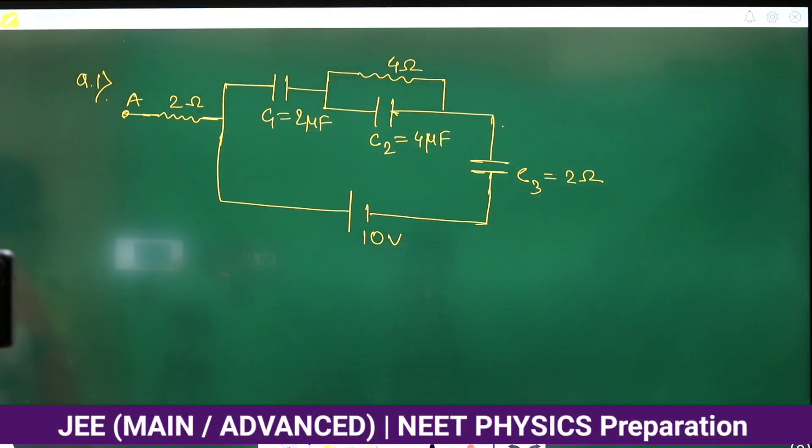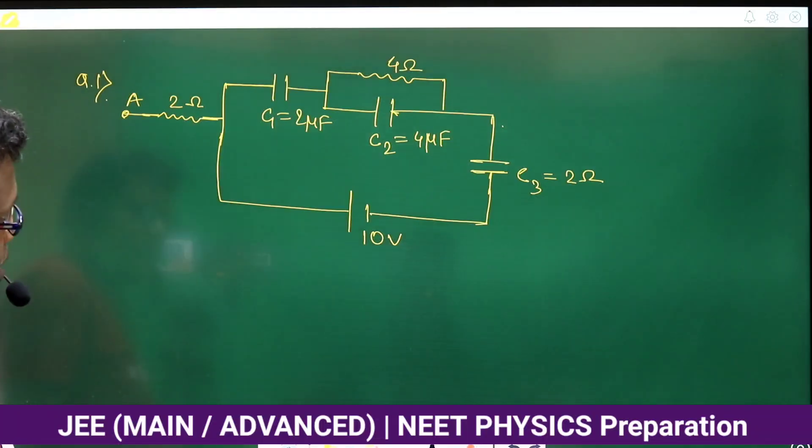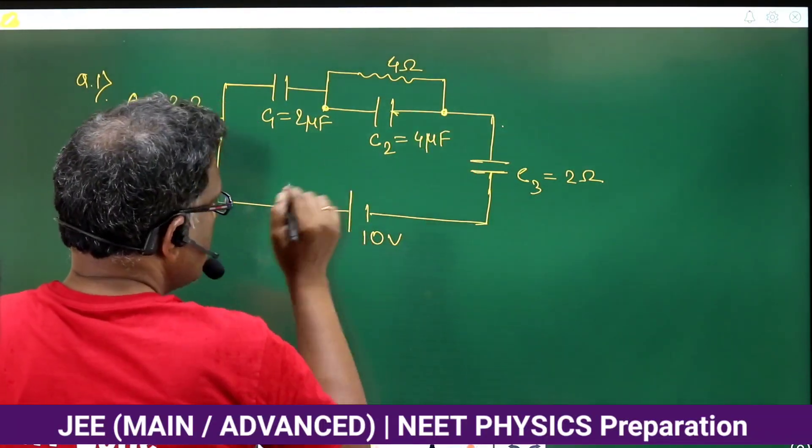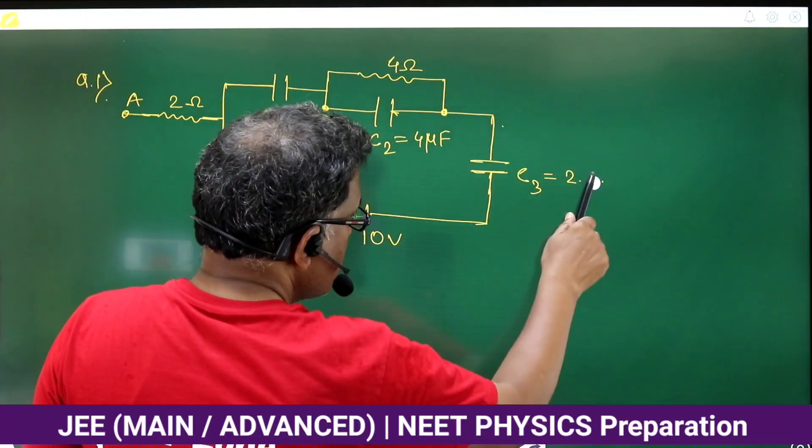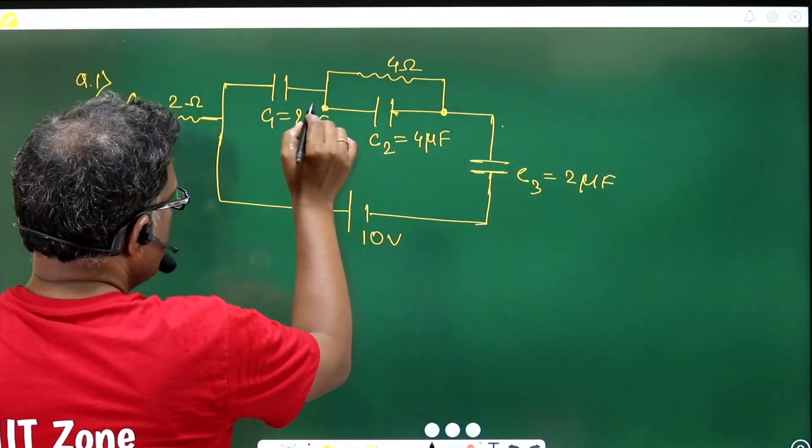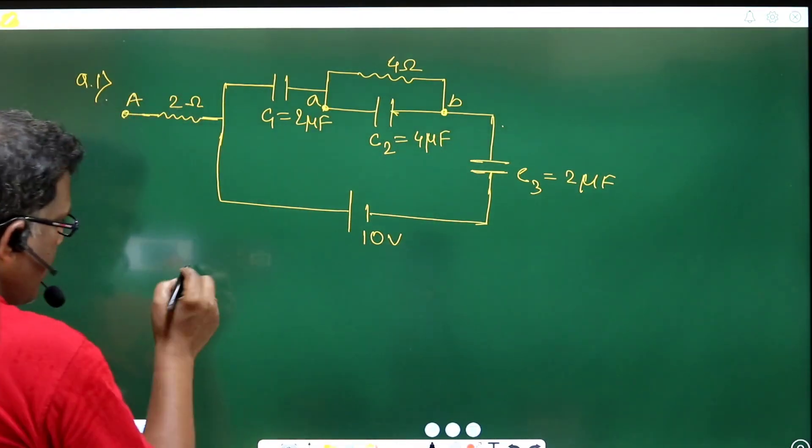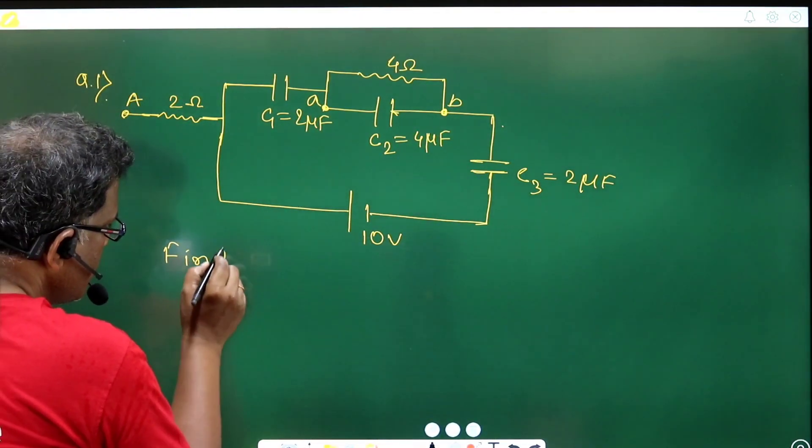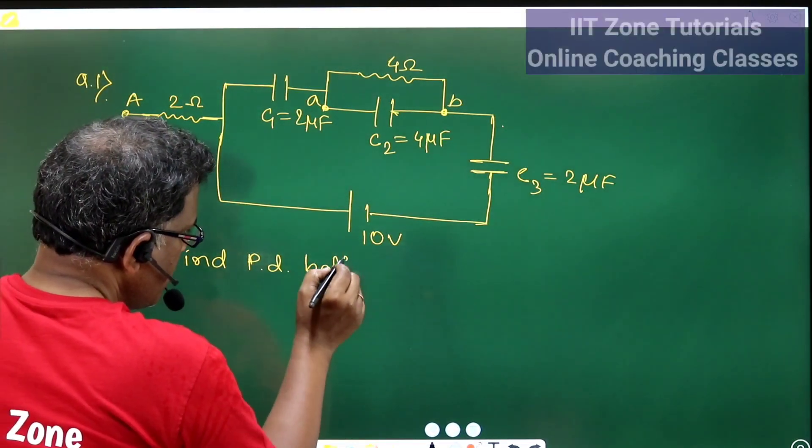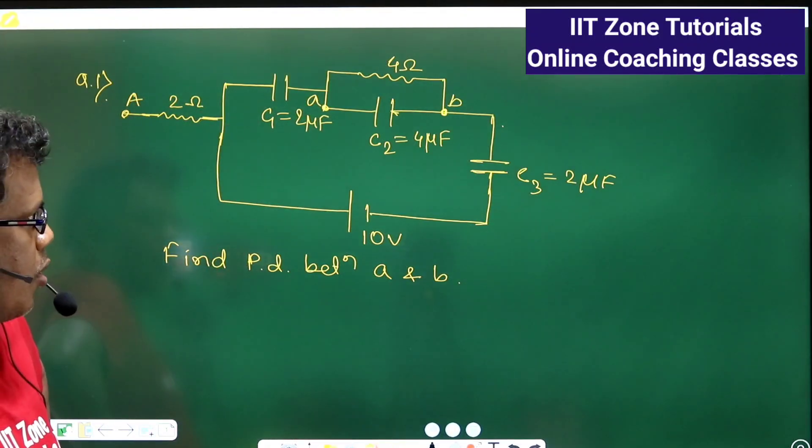This is a diagram given. They apply 10 volts, so what we want to know is: in between these two points, if I name this point suppose small a and small b, what will be the potential difference between small a and b? The potential difference between a and b.